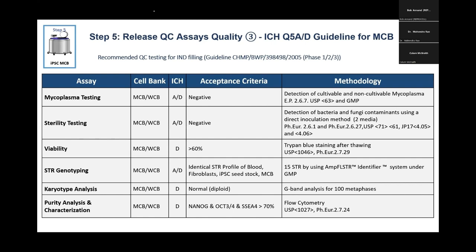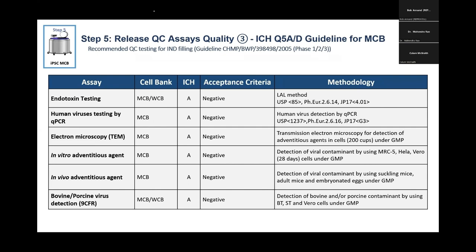Purity analysis and characterization are used as acceptance and release criteria. There's endotoxin testing, standard human virus testing, and adventitious agent testing. If exposed to xenomaterial, bovine and porcine virus testing must be done. Importantly, this applies not just to your own media and reagents but also to your primary and secondary suppliers — especially for commercial manufacturing. Collecting that kind of documentation from secondary suppliers takes quite a lot of time.